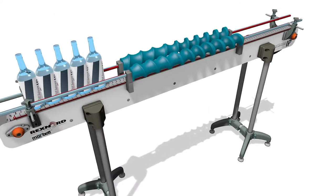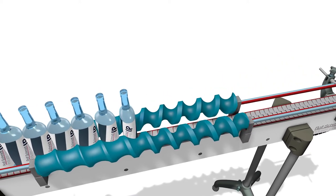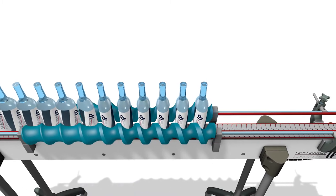This conveyor solution starts by separating the bottles at a given spacing while turning them 90 degrees. They are then fed into the next process step with correct spacing.